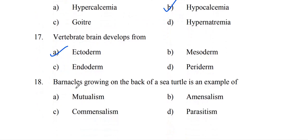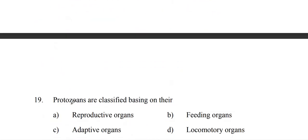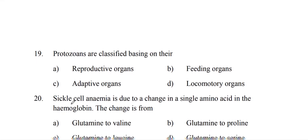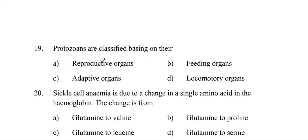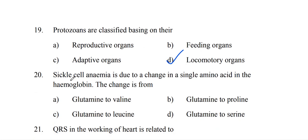Barnacles growing on the back of a sea turtle is an example of commensalism. Protozoans are classified based on their locomotory organs. Sickle cell anemia is due to a change in a single amino acid in hemoglobin — the change is from glutamic acid to valine.